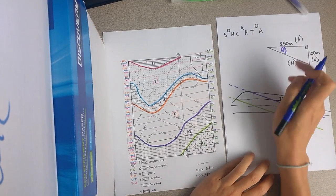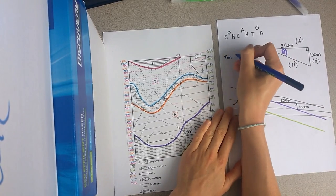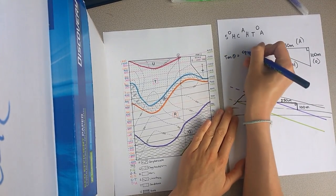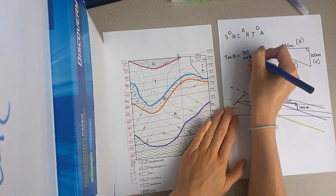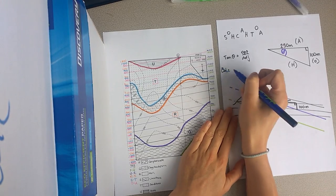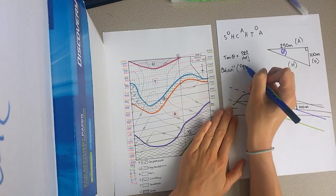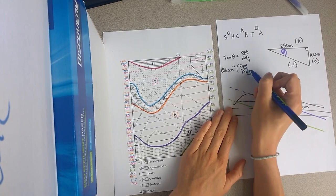So you can see here, tan would equal opposite over adjacent, okay? So then the angle would equal inverse tan, opposite over adjacent.